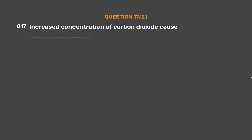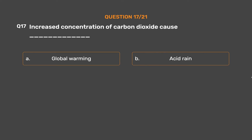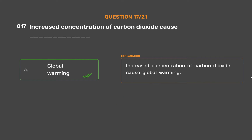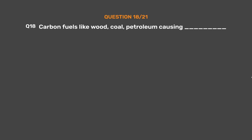Question number 17: Increased concentration of carbon dioxide causes _____. Option A: Global warming. Option B: Acid rain. Option C: Respiratory diseases. Option D: None of these. The correct answer is Option A: Global warming. Increased concentration of carbon dioxide causes global warming.